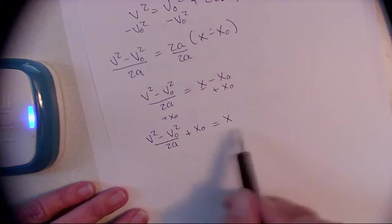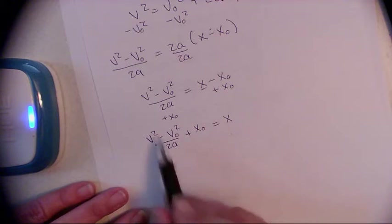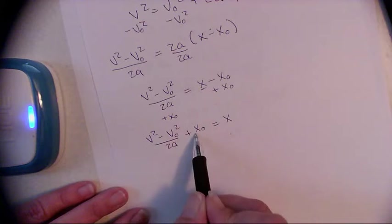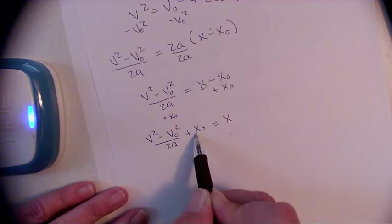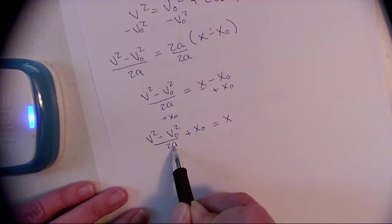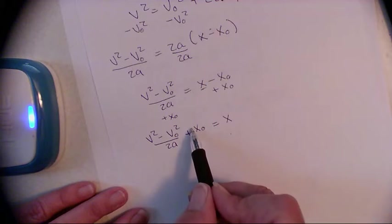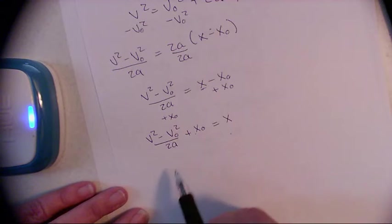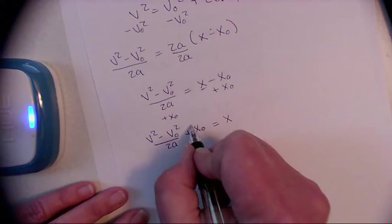Rewrite it. v squared minus v naught squared divided by 2a plus x naught equals x. And it could be that this makes you break out into hives because you have mixed fractions, so let's make this look pretty and make this left side be all just one fraction. And we're going to do that by getting a common denominator. This has 2a down here, so to make it a common denominator I'm going to multiply 2a up top and bottom here, that way I can combine that fraction.